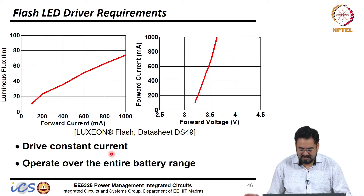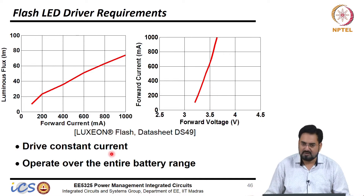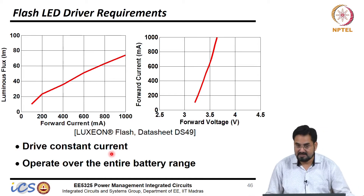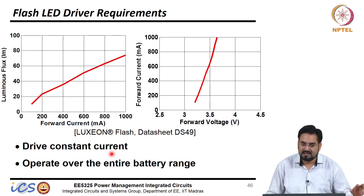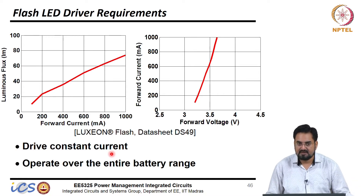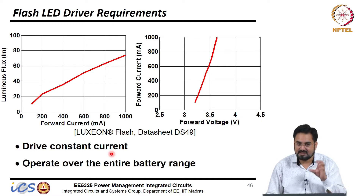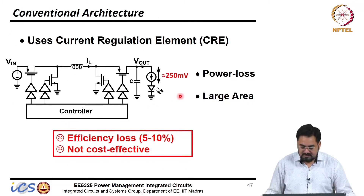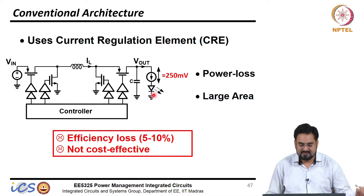Most of the time this flash uses 1 or 2 LEDs. These days you may find even 3 LEDs in very high-end phones, but they are different color LEDs in order to get a more realistic picture. They mix the colors and change the light color when flashing. Let us say we are having only a single LED in this flash.